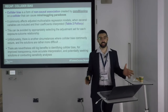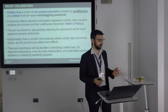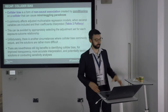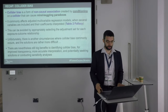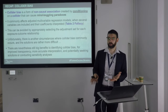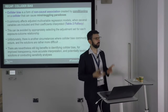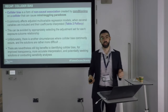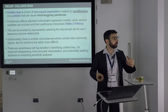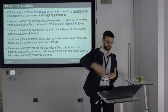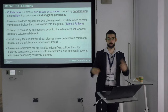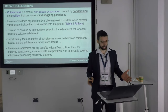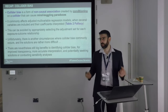To recap from yesterday: collider bias is a form of non-causal association that is created when we condition on a collider. It can create mind-boggling paradoxes when you have quite severe associations, and it will commonly affect multivariable regression models where several different variables are being mutually adjusted — ending up with the table two fallacy where various variables are mediators for other variables, and by conditioning on them we open backdoor paths and strange conditional dependencies.